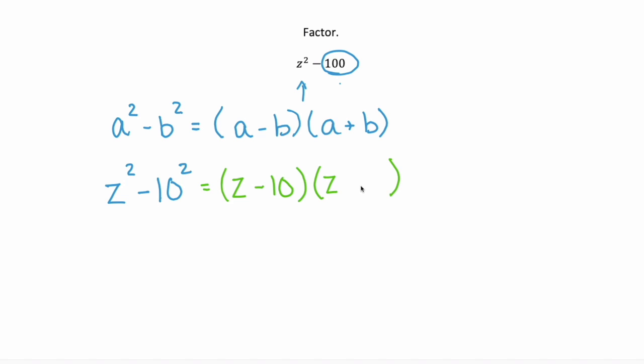Just like with all of the other factors, you can check. We have two binomials, so we're going to check by using FOIL. First, z times z is z². Outer is +10z.